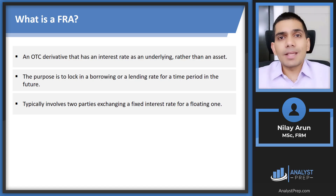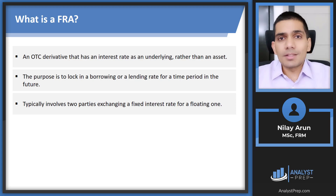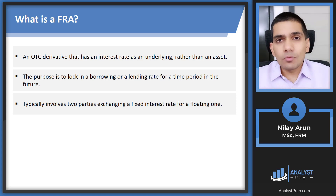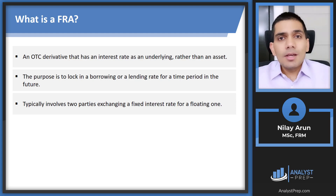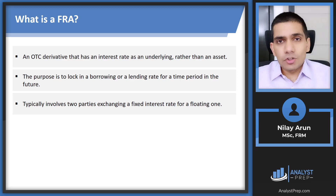The purpose of a forward contract is to lock in a future transaction value. One party goes long and the other goes short, agreeing on the transaction value in advance. For an FRA, that transaction value is not the price of a physical commodity like gold or a financial asset like a stock or bond, but an interest rate.